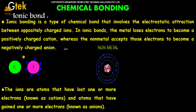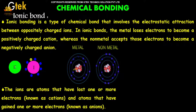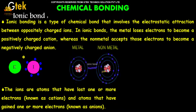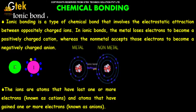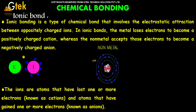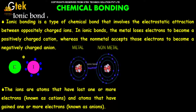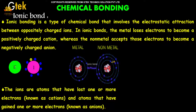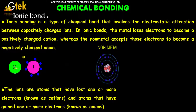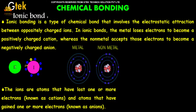Ionic bonding is a type of chemical bond that involves the electrostatic attraction between oppositely charged ions. In ionic bonds, the metal loses electrons to become a positively charged cation, and the non-metal accepts the electron to become negatively charged. Here, K plus is the cation and I minus is the anion.